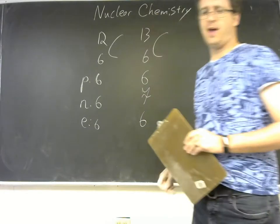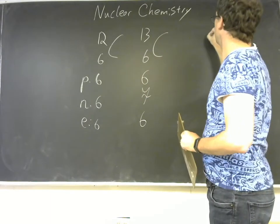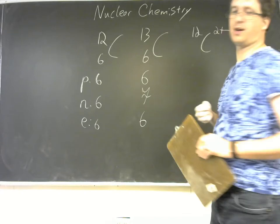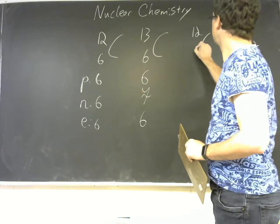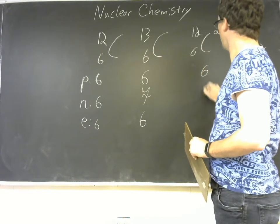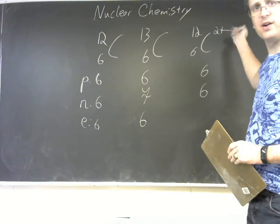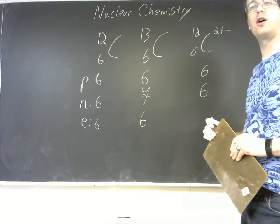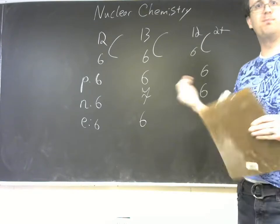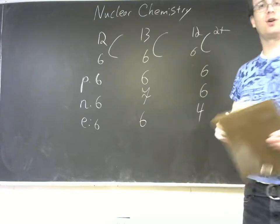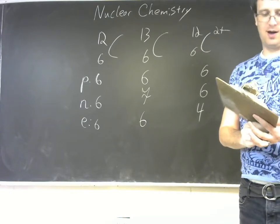And then you could have something like, say, carbon-12, but maybe it's a 2 plus ion. So 6 protons, 6 neutrons. But because it's carrying a positive 2 charge, that means that it's missing 2 of its electrons. So there will be 4 electrons. Okay, now hopefully that's a review for you.